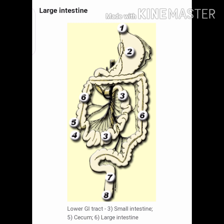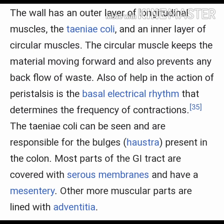At the junction of the cecum and ascending colon there is a sphincter — the ileocecal valve — which slows the passage of chyme from the ileum, allowing further digestion. It is also the site of appendix attachment. The wall of the large intestine has an outer layer of longitudinal muscle called the taenia coli and an inner layer of circular muscles. The circular muscles keep material moving forward and prevent backflow, helping the action of peristalsis. The basal electrical rhythm determines the frequency of contractions.